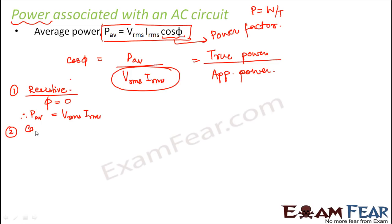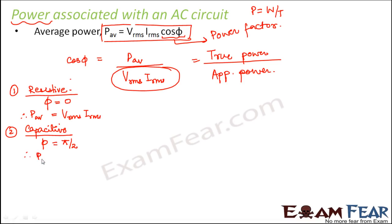Now let's talk about a capacitive circuit. In a capacitive circuit — C for capacitive, C for current — current leads voltage by 90 degrees. So the value of φ is 90° or π/2, and cos 90° is equal to 0. Therefore, P_average is equal to 0. So average power associated with a pure capacitive circuit is 0.